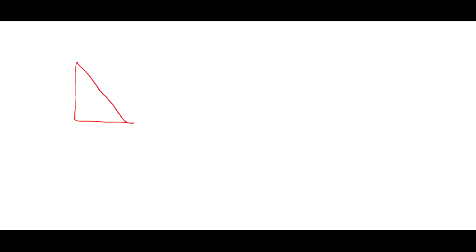Let's do another example. We have a triangle with points A, B, and C. This angle is 90 degrees. This side is 12 and this side is 5, and the question is asking us to find AB. So we have a right angle triangle with two lengths and we want to find the side opposite the right angle, which is really the hypotenuse. We can apply Pythagoras' Theorem: C squared is equal to A squared plus B squared.